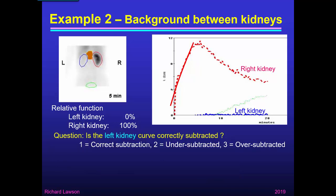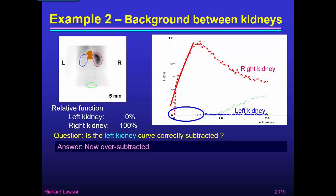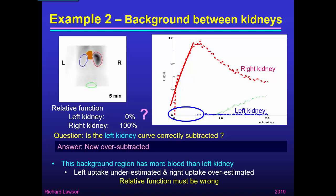What about the left kidney? My answer is that it is now oversubtracted — we've taken off too much background. The curve has gone negative, although the computer has decided not to display the negative part of the curve, but you can see it obviously started off below the axis. This particular background region has more blood than the left kidney but less blood than the right kidney — so the left uptake was underestimated and the right uptake was overestimated, meaning the relative function must be wrong. 0% for the left kidney can't be right.